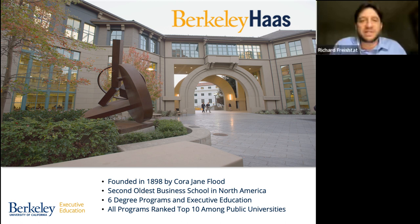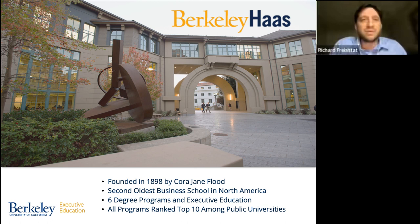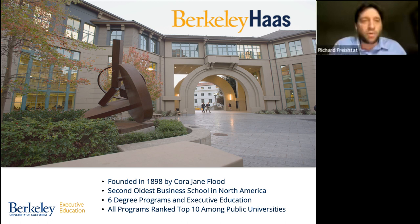Sitting within UC Berkeley is our Berkeley Haas School of Business, which was founded 30 years after the university itself by Cora Jane Flood, a philanthropist and trustee for the university. She had the foresight to say we should start a college of commerce, and with her philanthropic efforts she endowed the first four faculty positions, which later became Berkeley Haas. That makes us the second oldest business school in North America. Berkeley Haas has six degree programs — undergraduate, four different master's degrees, a PhD program, and executive education — and all programs are ranked among the top 10 public universities in the world.